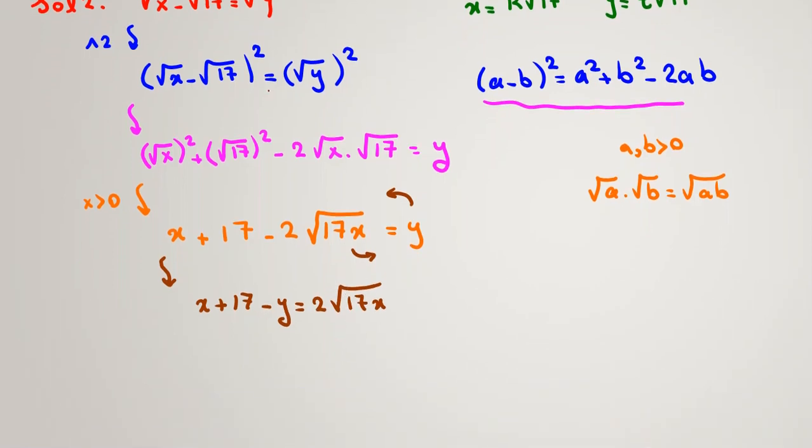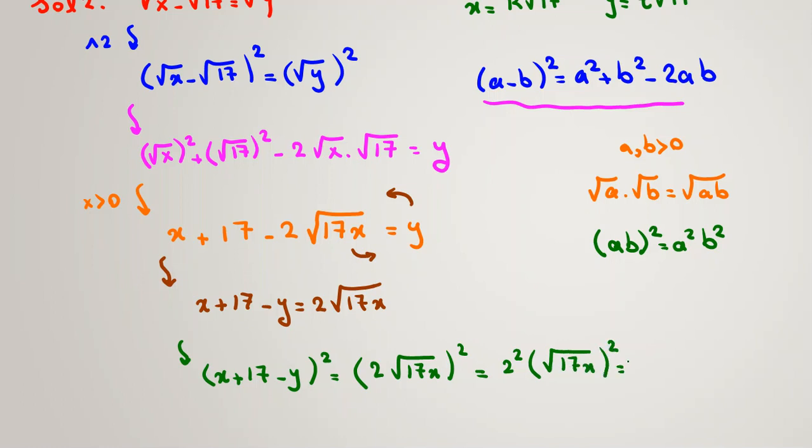Now you can pause the video and try the rest by yourself. I write x + 17 and take y to right side, this to left side, this to right side. It will be x + 17 - y = 2√(17x). Now here I raise both sides to the power of 2. If I do that, it will be (x + 17 - y)² = (2√(17x))². It will be 2² times √(17x)² equals 4×17x, which will be 68x.